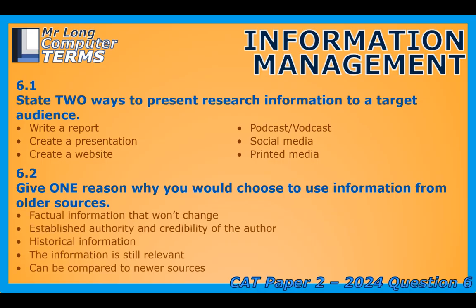When finding information, you really want to get the most recent and up-to-date information. However, there are special cases — for example, if there's old information that hasn't really changed, maybe it's historical information about old events, then that probably hasn't changed much in years and is normally okay to use. If the information is from an established authority or the credibility of the author is very good, you might trust it. Historical data, like information about World War I or events from the 1800s, is not going to change. It's always good to compare it to newer sources, and if those haven't changed either, then the old information is still useful.